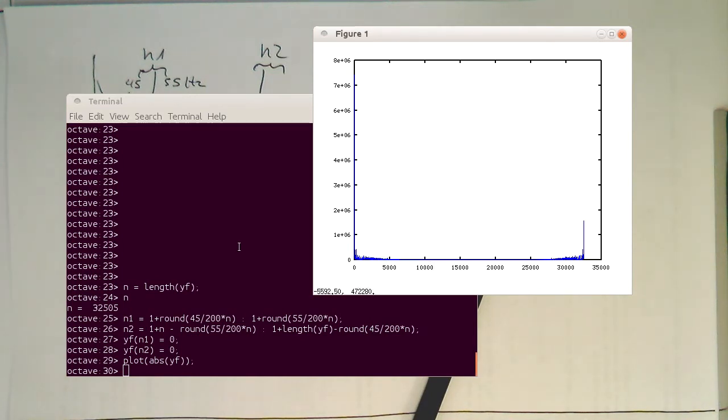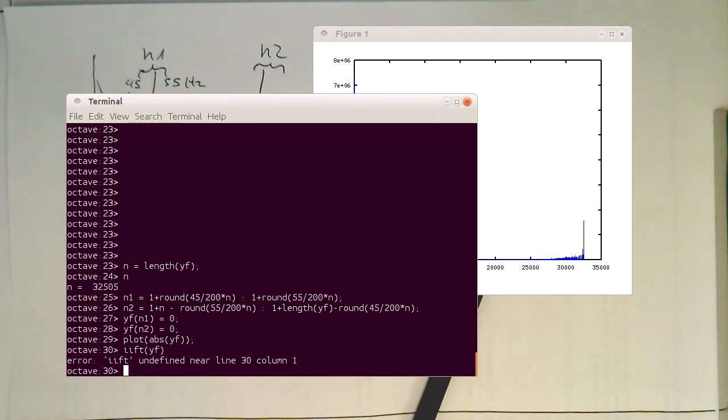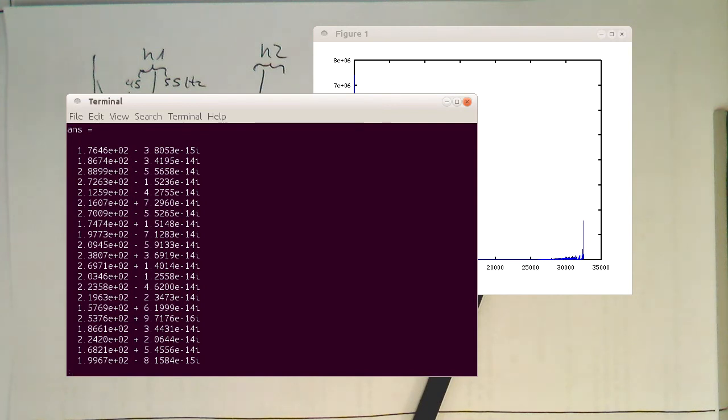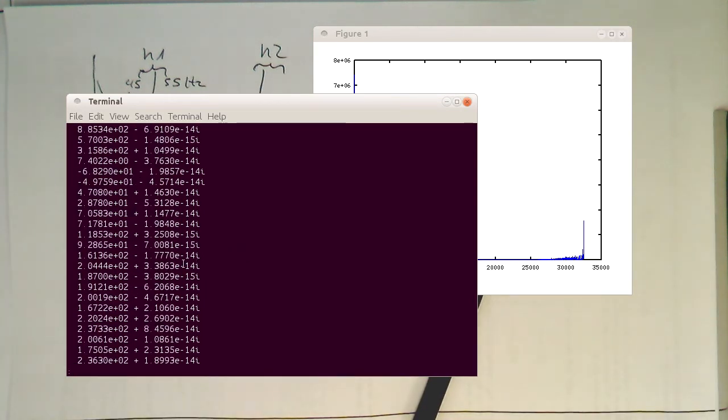So now what we do is we do an inverse Fourier transform. Let's just do this. Inverse Fourier transform. And so now we see our results here. We see that the tiny complex numbers here remaining, this is just numerical, these are just numerical imprecisions. And so therefore we need to take the real part of the signal here if we want to plot this properly.